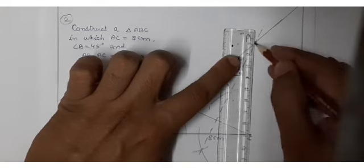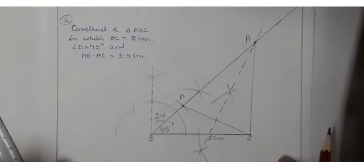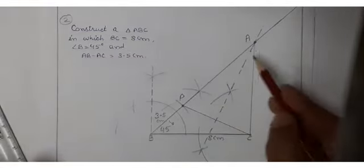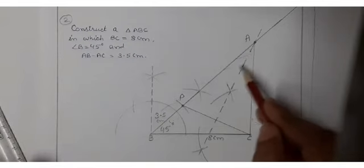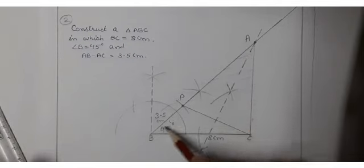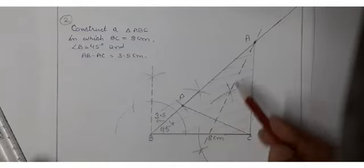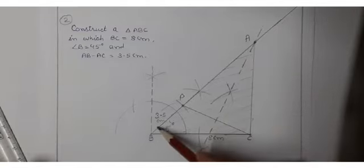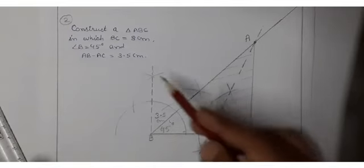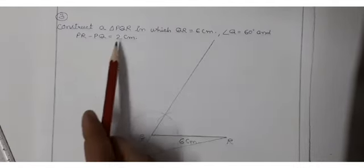After getting point A, join AC. When you shade triangle ABC, and subtract AB minus AC, you will get 3.5 centimeter, confirming the construction is correct.